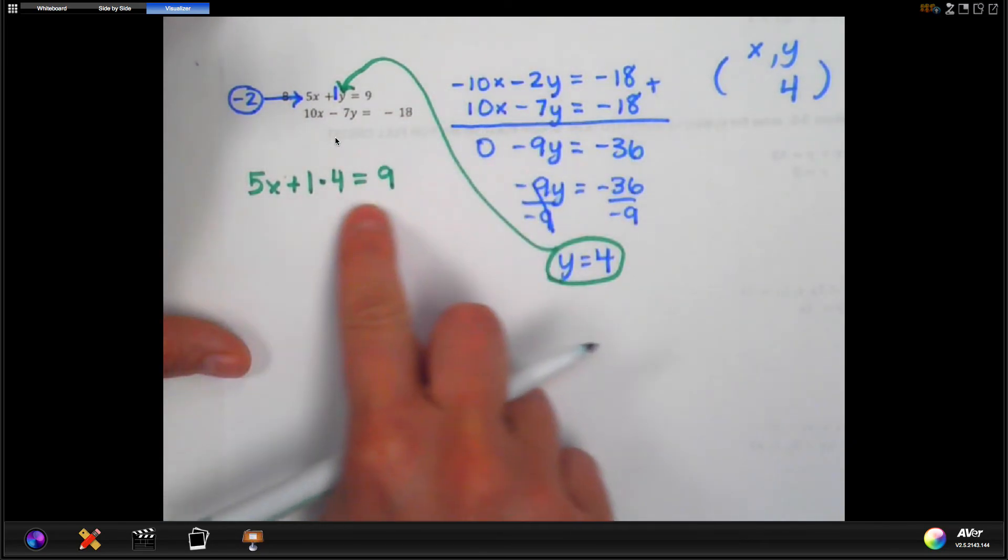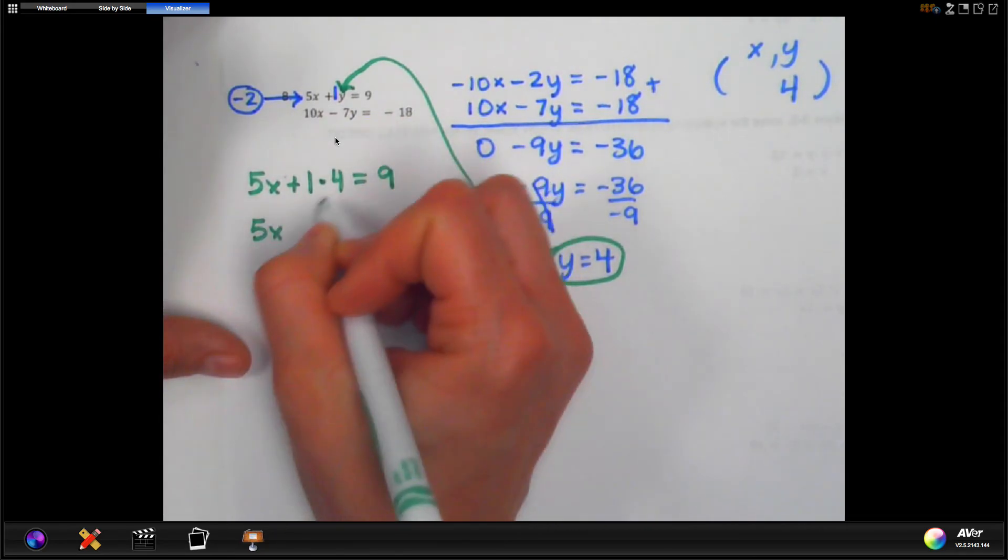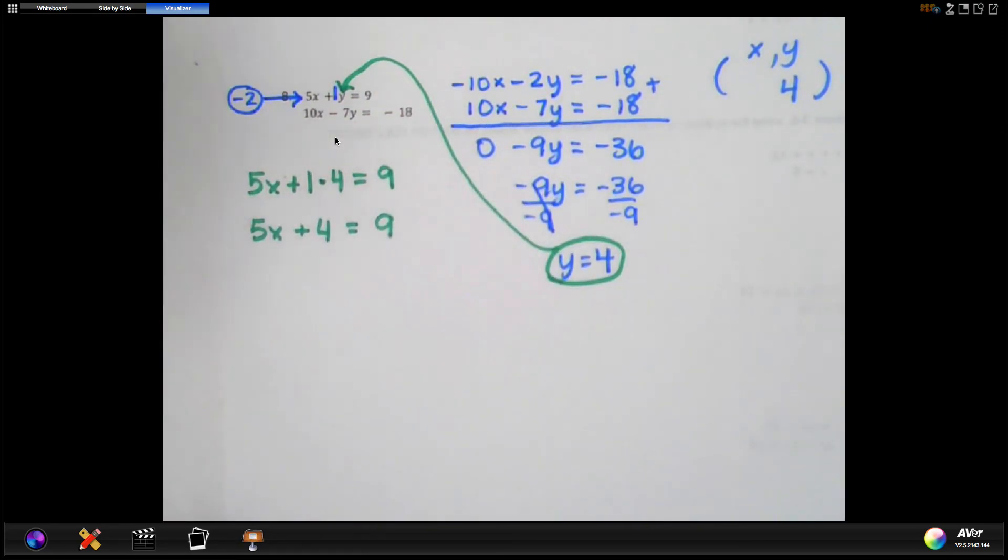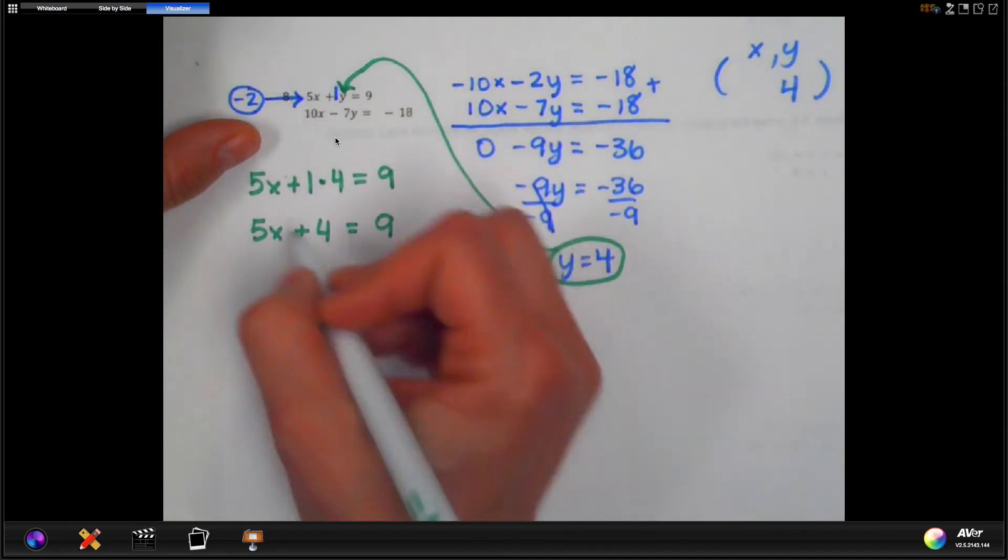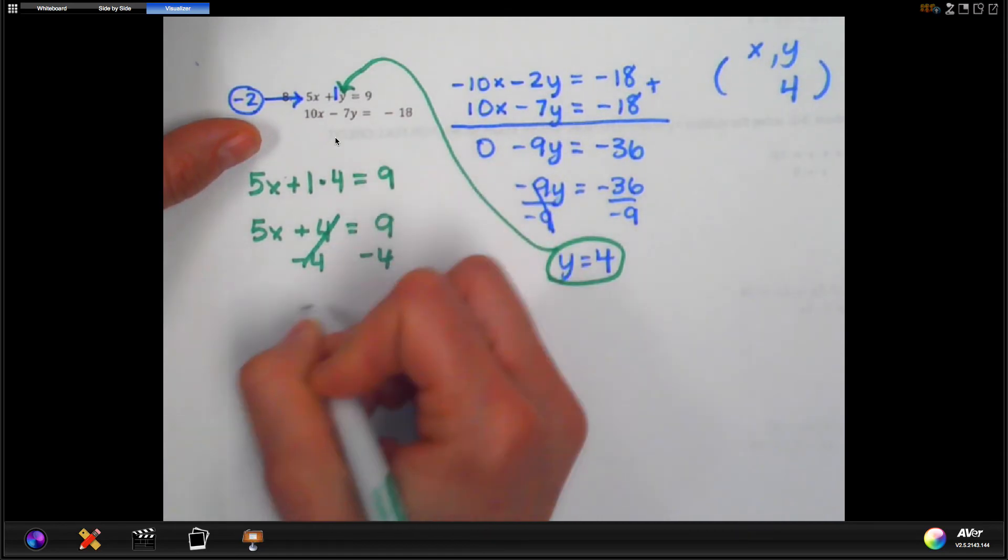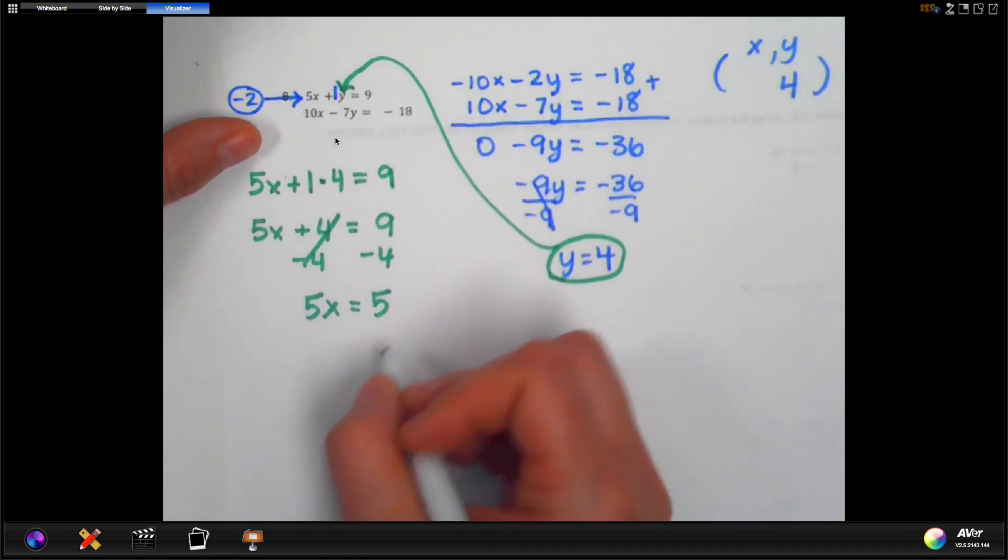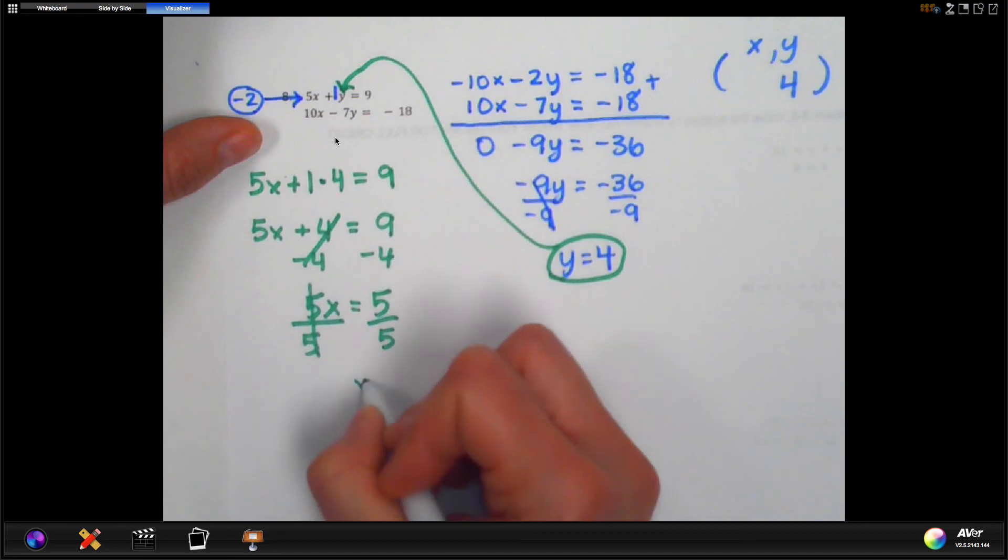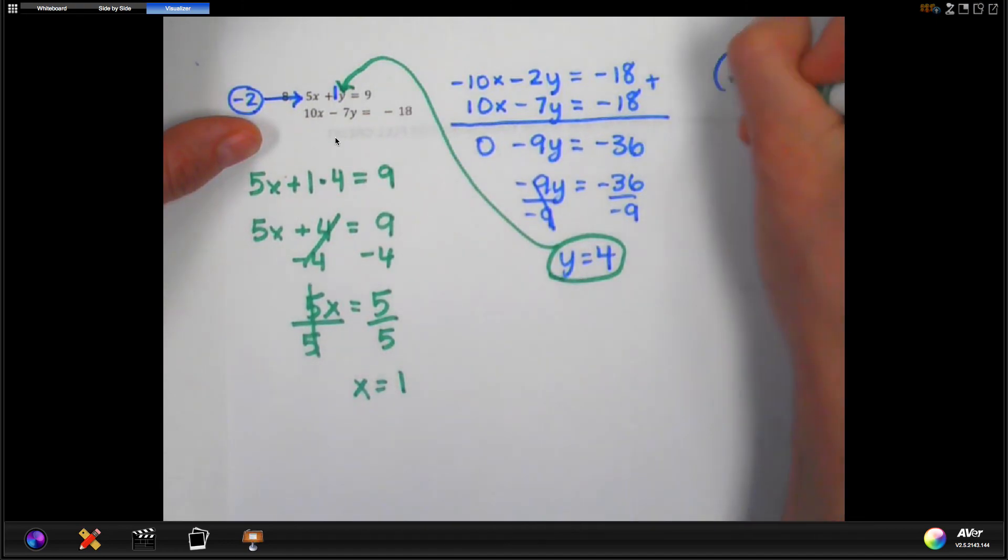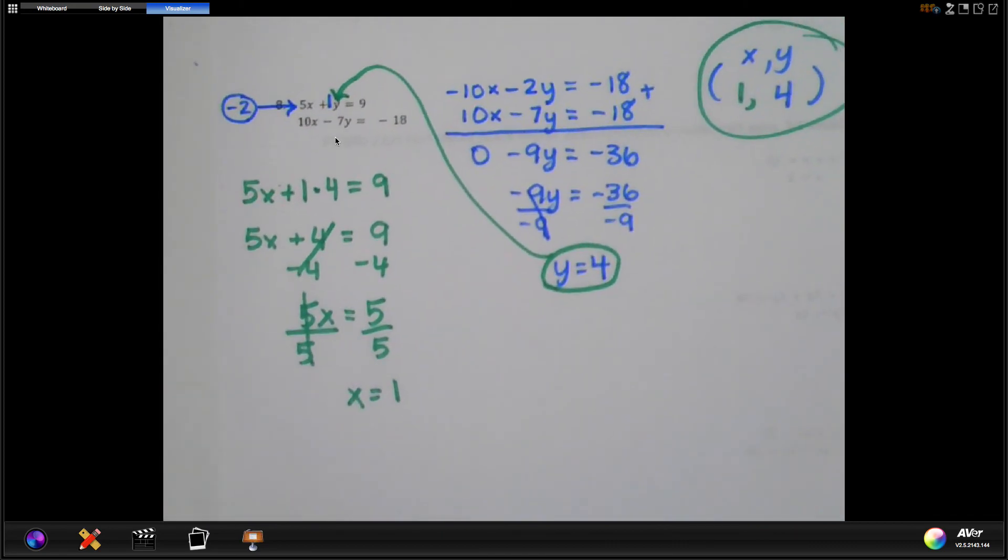All right, now if you take a look at this, it's clear we need to multiply. So 5x, 1 times 4 is positive 4. So we're going to write that down, equal 9. And now you have a two-step equation. So to undo everything that's on this side, we're going to subtract 4. So 5x, bring that down. 9 minus 4 is 5. And then our final step is to divide by 5 here and divide by 5 here. 5 divided by 5 is 1, and that's the end of our answer here. So we get 1 comma 4.